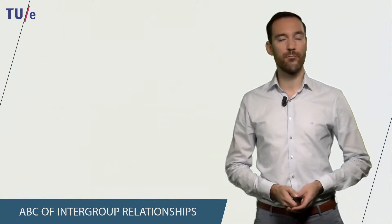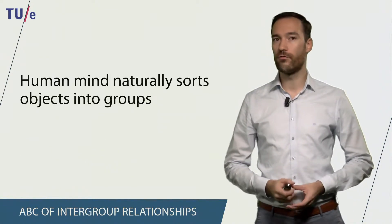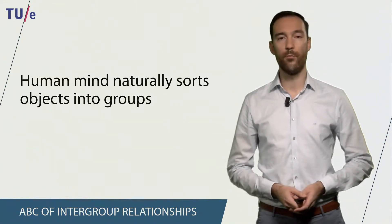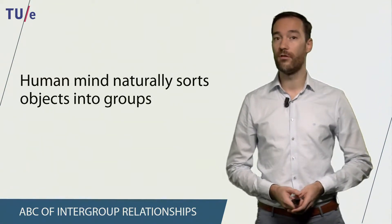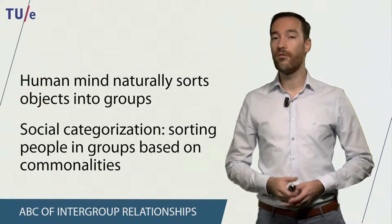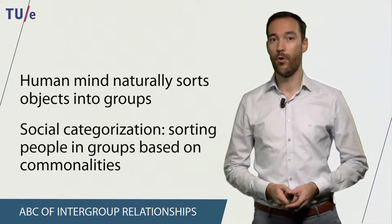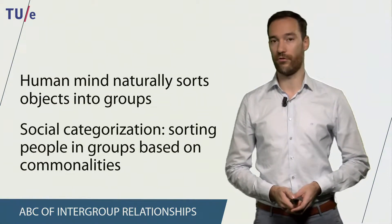When we think about intergroup relationships, it is important to realize that our human mind naturally sorts all kinds of objects into groups. This means that we also do this to people. When we sort people in different groups based on their group membership, we call this social categorization.